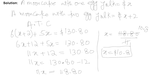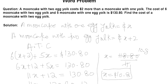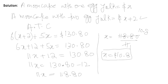A moon cake with one egg yolk is x dollars, so x = $10.80 is the price for that. But do not forget — sometimes students feel that once they get the value of x the question is done. No! You have to read the word problem again and check what was actually being asked. The question says find the cost of a moon cake with two egg yolks, so we are not done yet. Plug x back in: x plus 2 gives $12.80.